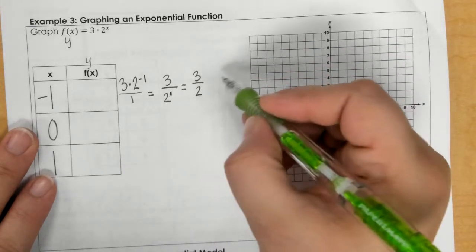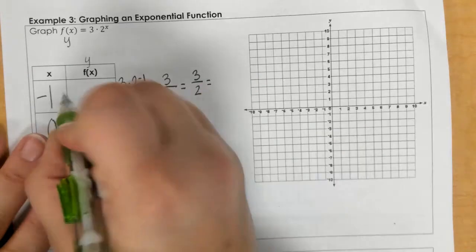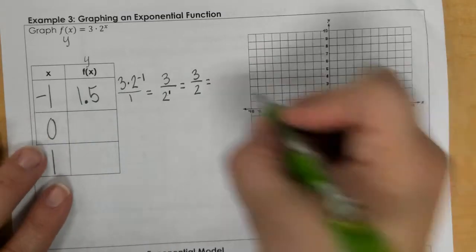Since I have to graph this, I need a whole number here. So, 3 divided by 2 gives me a decimal 1.5, which I can still graph. So 1.5.